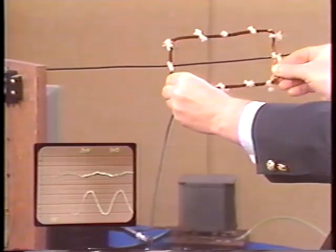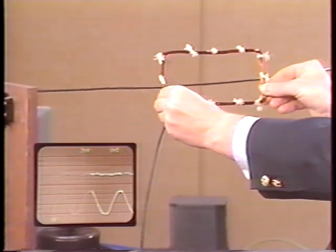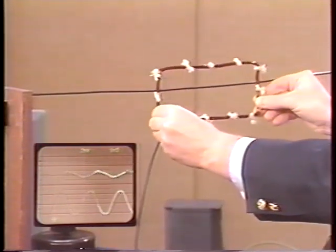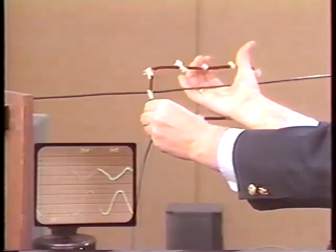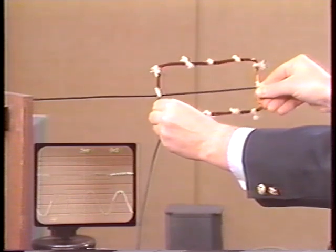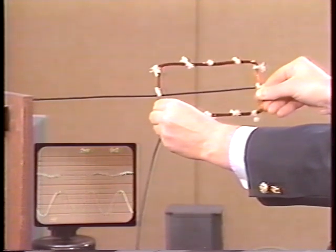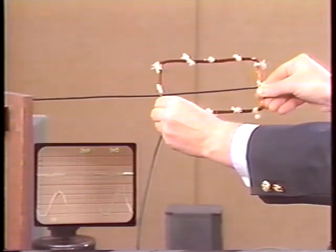With the coil straddling the wire, the flux passing through the coil in the upper section is oppositely directed to the flux through the lower section. With it symmetrically positioned, the net flux is zero, so the measured voltage is zero.